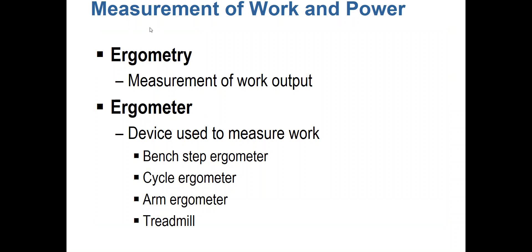When we measure work and power with a device, that device is called an ergometer. Ergometry is the measurement of work output or power output, and an ergometer is any device used to measure that work. This can be a bench step ergometer, a treadmill, an arm ergometer, or whatever the case may be — any device in which we can accurately measure the distance and the force being applied. Even a rack with a barbell is considered an ergometer, depending on what you're trying to measure.